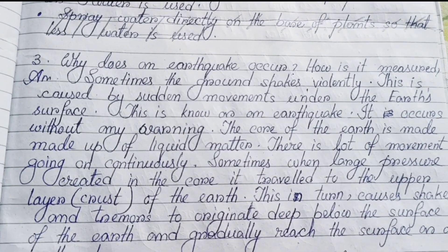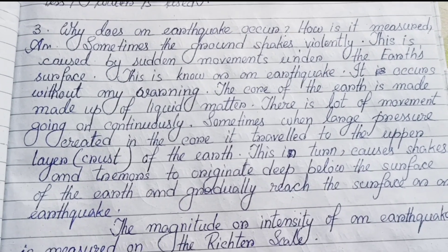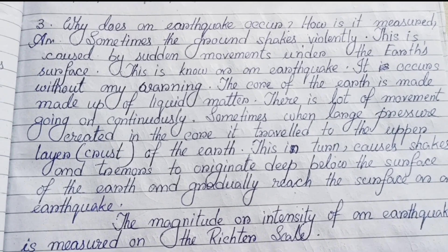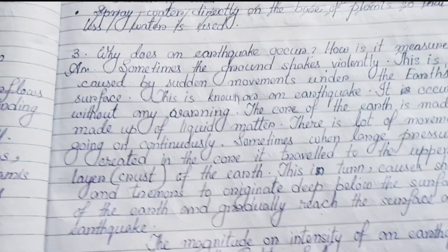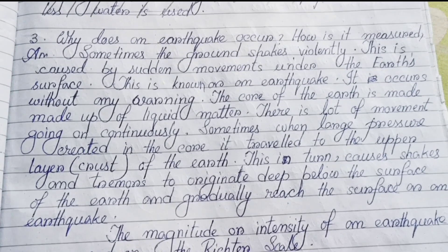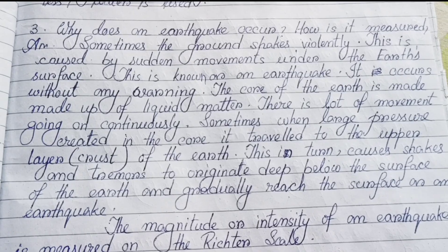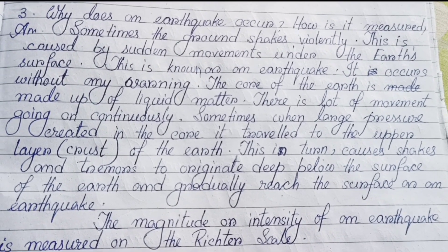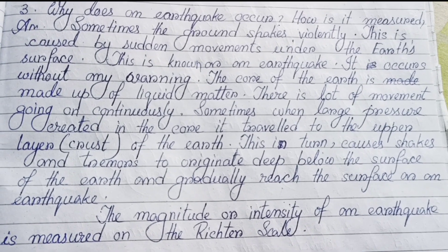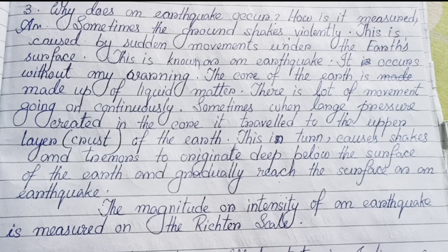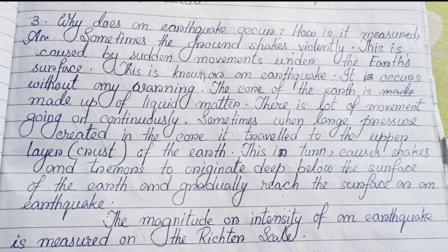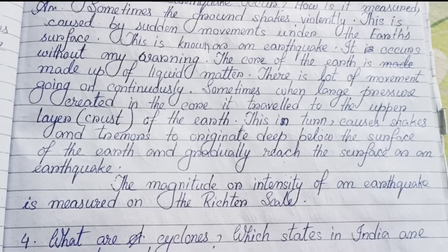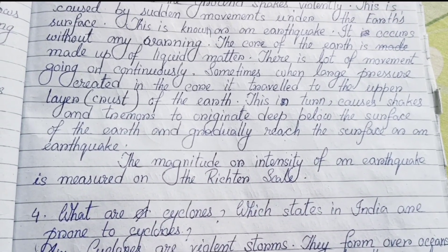Number three: Why does an earthquake occur? How is it measured? Sometimes the ground shakes violently. This is caused by certain movements under the earth's surface, known as an earthquake. It occurs without any warning. The core of the earth is made up of liquid matter, and there is a lot of continuous movement. When large pressure is created in the core, it travels to the upper layer of the earth, causing shakes and tremors that originate deep below the surface and gradually reach the surface as an earthquake.